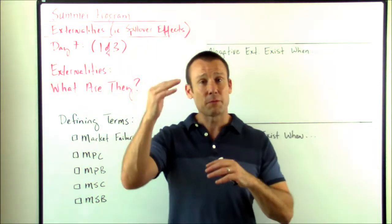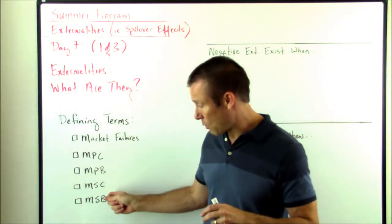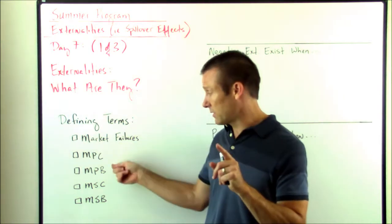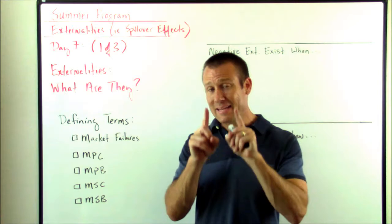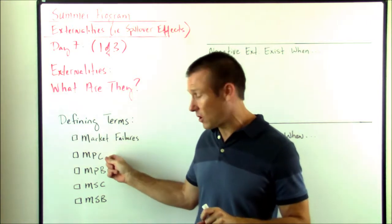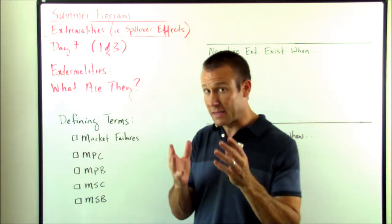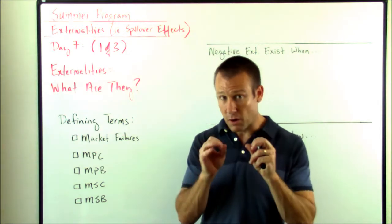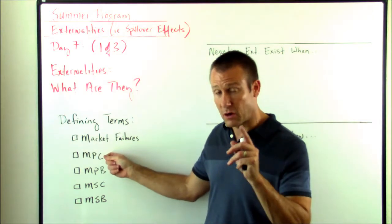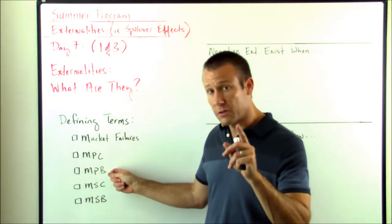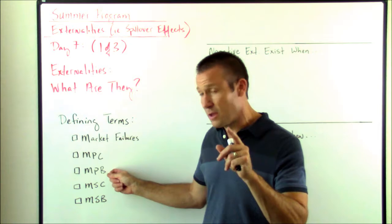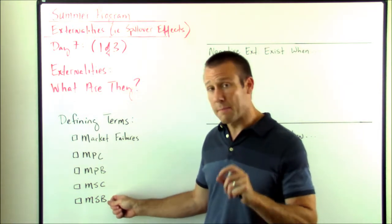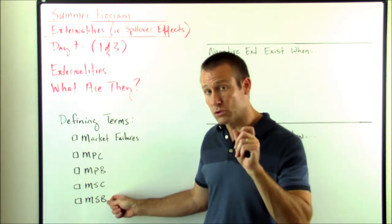If we want to optimize our societal outcome, we're going to care more about social costs and benefits than private ones. However, private costs and benefits are still very important because market participants make decisions based on their private cost and private benefit. That's why we're going to get a market failure with an externality — because the producer only takes into account private cost, and the consumer only takes into account private benefit, but what we ultimately care about is marginal societal cost and marginal societal benefit.